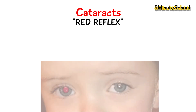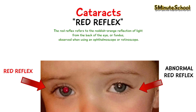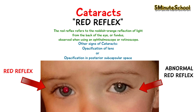One of the signs of a cataract is the absence of the red reflex. The red reflex is the reddish-orange reflection from the back of the eye, often seen when using an ophthalmoscope or retinoscope. The absence of this red reflection is a sign of some kind of blockage, which could be due to a cataract. There is also opacification within the lens or in the posterior subcapsular space.